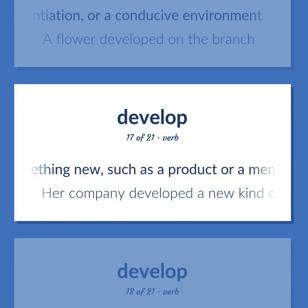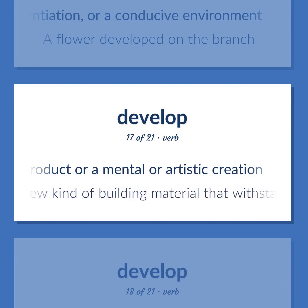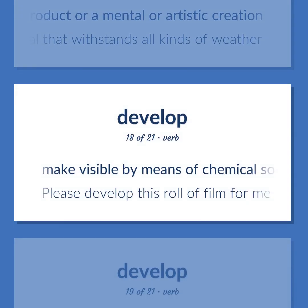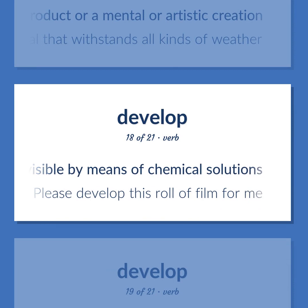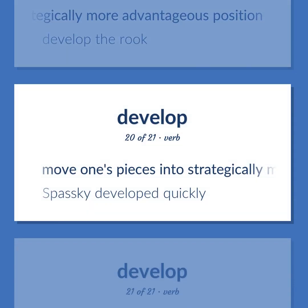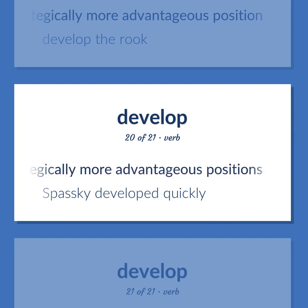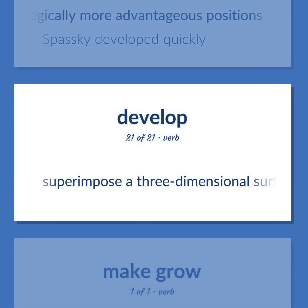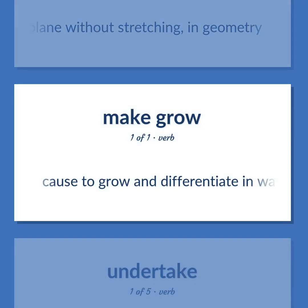Develop: make something new, such as a product or a mental or artistic creation — 'Her company developed a new kind of building material that withstands all kinds of weather.' Make visible by means of chemical solutions — 'Please develop this roll of film for me.' Move into a strategically more advantageous position — 'Develop the rook.' Move one's pieces into strategically more advantageous positions — 'Spassky developed quickly.' Superimpose a three-dimensional surface on a plane without stretching, in geometry. Cause to grow and differentiate in ways conforming to its natural development.